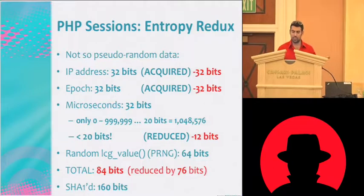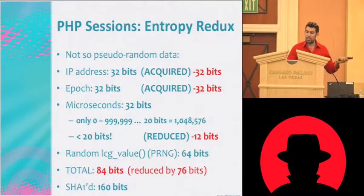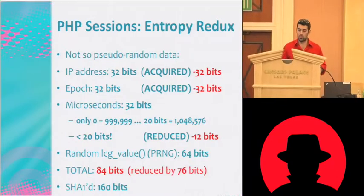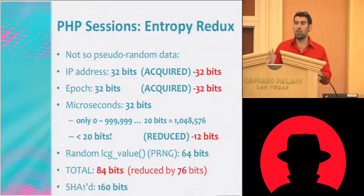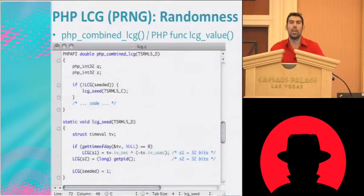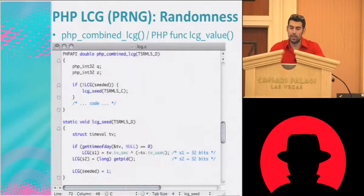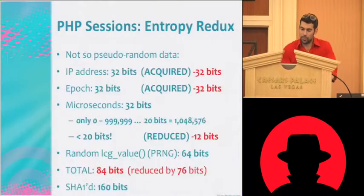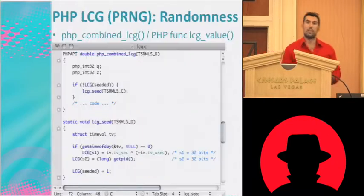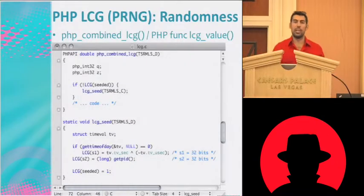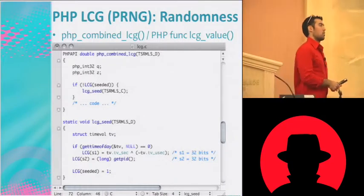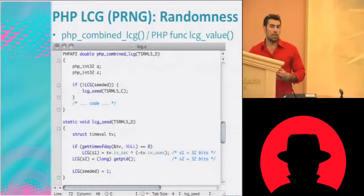Now the only thing left is 64 bits. We're probably not going to reduce the microseconds — it's just too much uncertainty dealing with network hops and so forth. If you work really hard you probably could, but it's not worth it. So let's look at the randomness, or pseudorandomness. It calls this LCG value function. An LCG is a linear congruential generator — a type of pseudorandom number generator. It's been studied for 20 to 30 years. There's a lot of information on it.